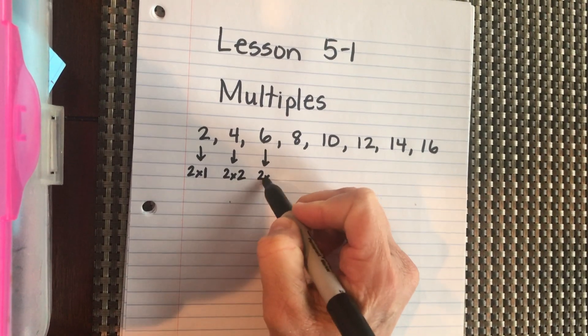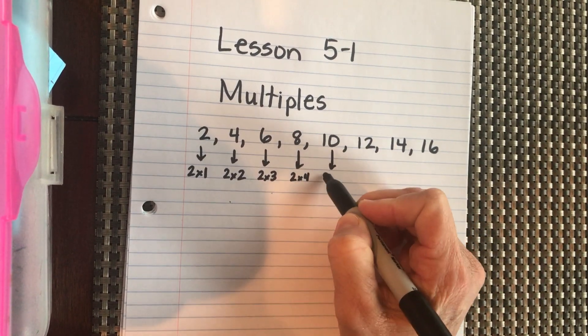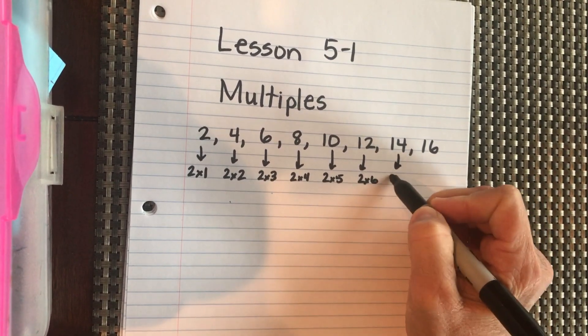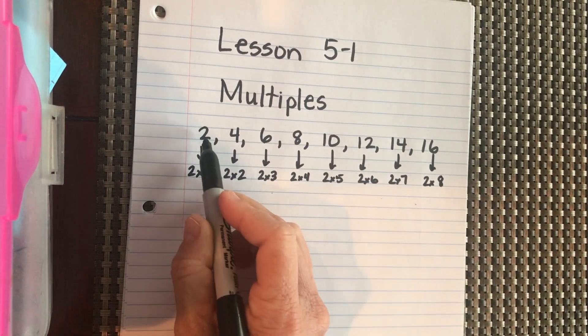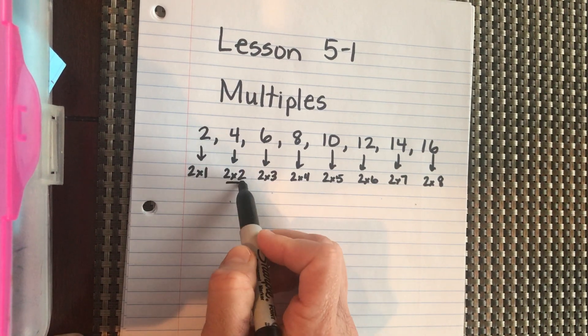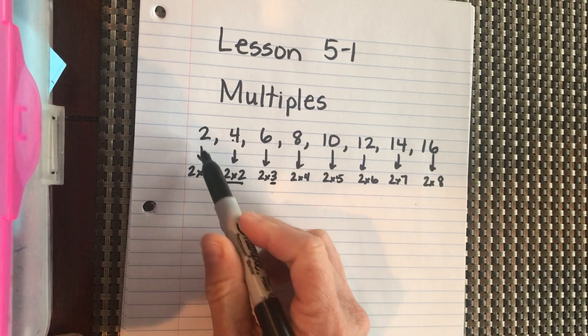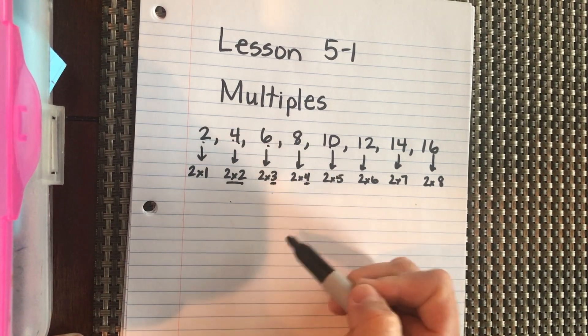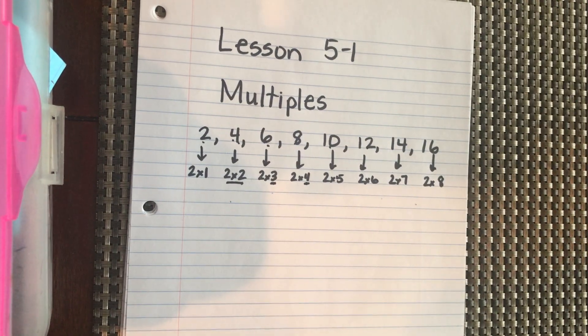But 2 times 3, 2 times 4, 2 times 5, 2 times 6, 2 times 7, and 2 times 8 because we're saying this is one group of two. If we count by 2, 4, we're saying we have two groups of 2. 2, 4, 6 is 3 groups of 2. 2, 4, 6, 8 is 4 groups of 2, 5 groups of 2, 6 groups of 2. Each time we're counting by twos, we're adding another group of two.